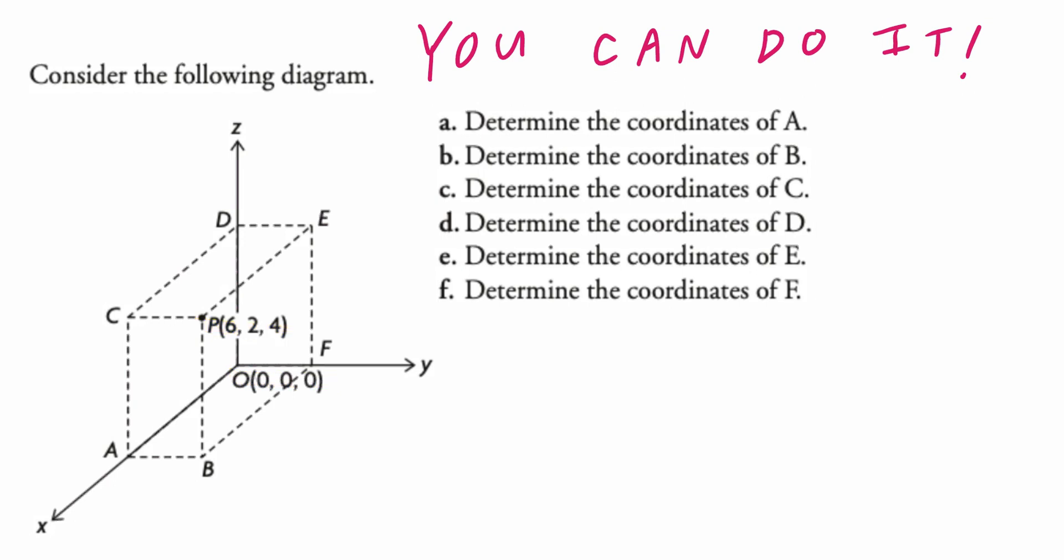The question becomes: how do we go from the beginning all the way to (6, 2, 4)? So you look at the x-axis, which is right here, and in the positive direction, you move six units: one, two, three, four, five, six. Step two, you look at the y-axis and you move two units in the positive direction, which is basically two to the right.